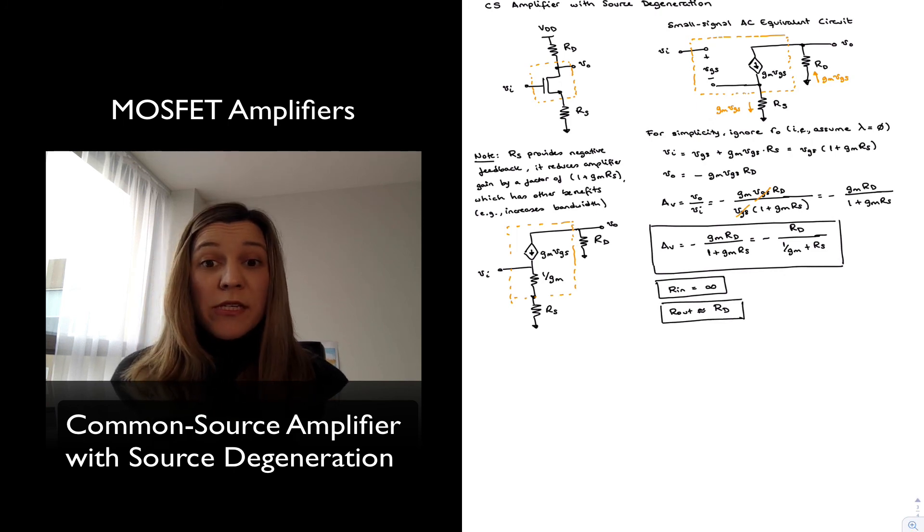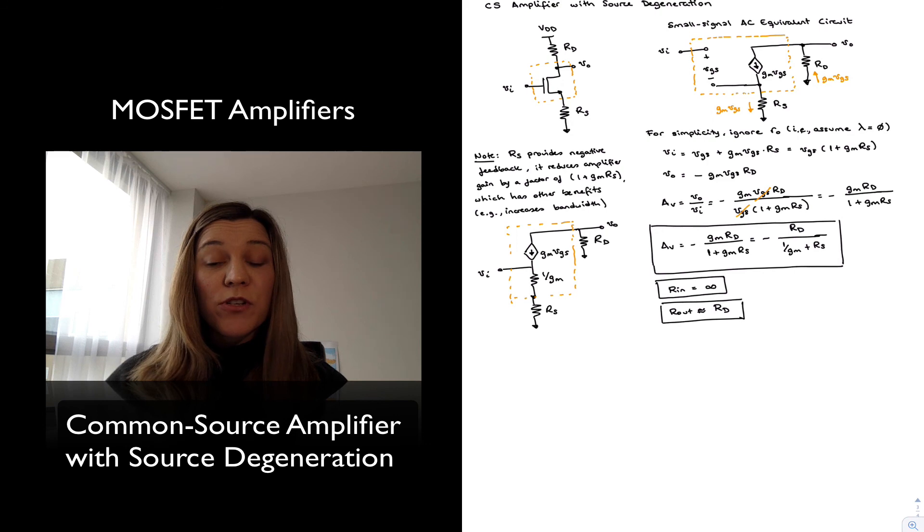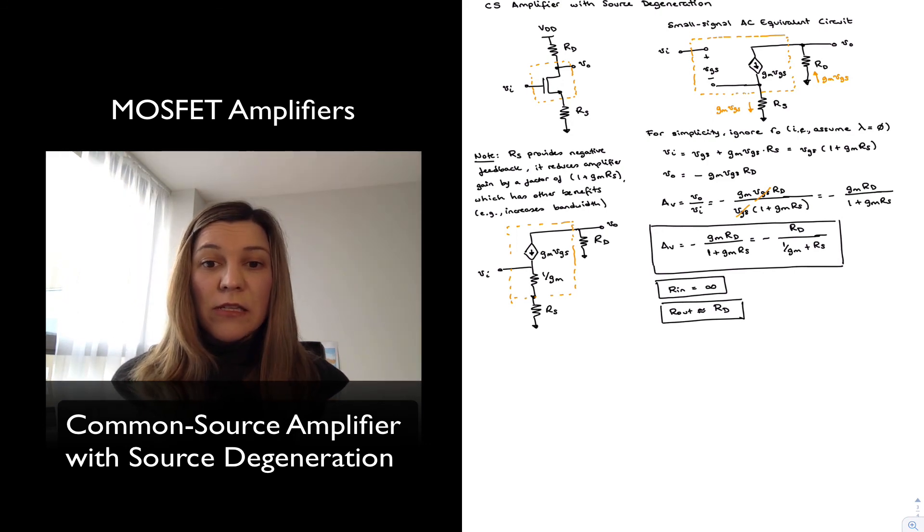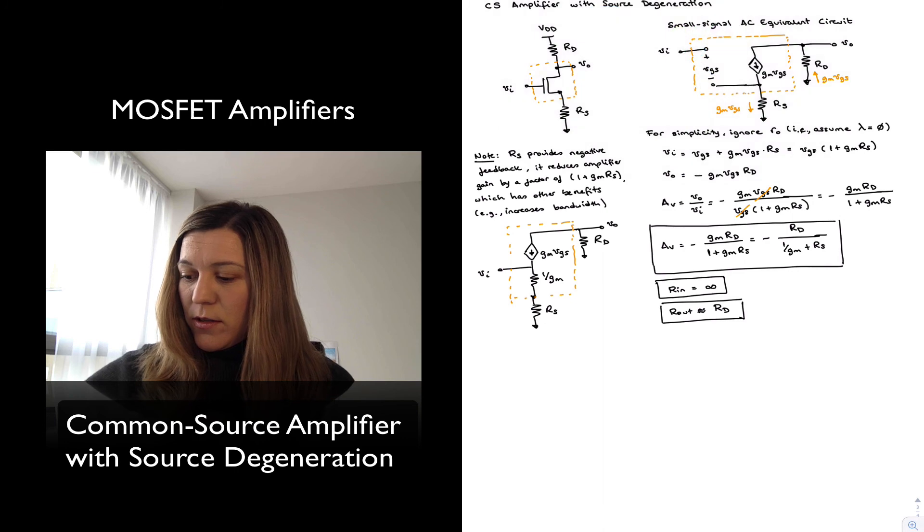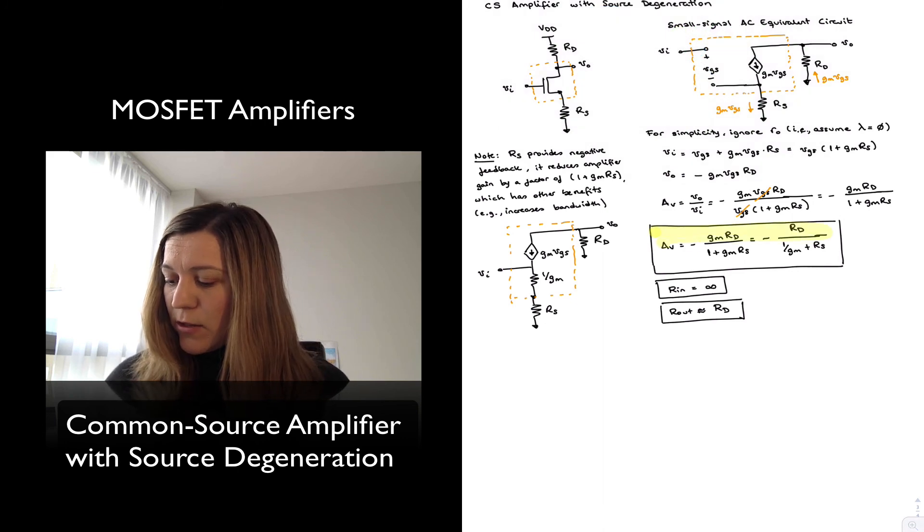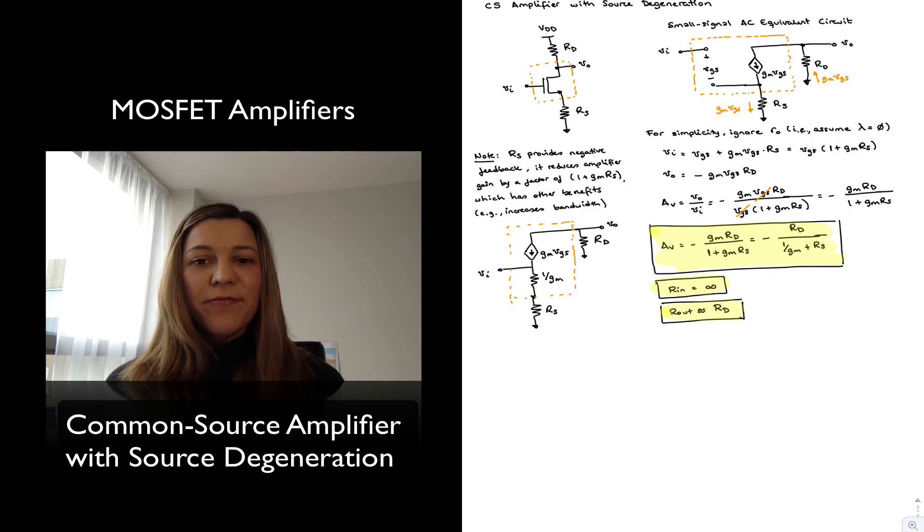The thing to remember is that mostly what is affected by the addition of the source degeneration resistor is the gain of the amplifier, and it is reduced overall. But other things, as we shall see, will be increased. The one that we're going to be focusing most on in this week's material is going to be the bandwidth. And that's it. I'll highlight those results and we can move on to the next type of amplifier.